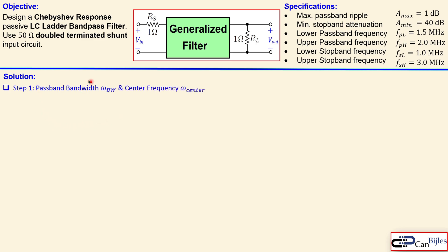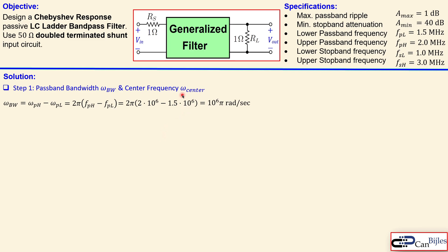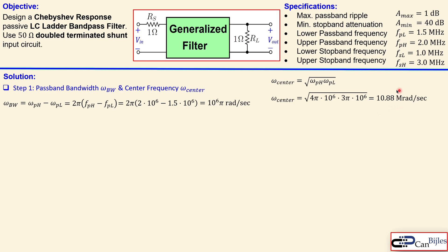Step 1 is calculation of the passband bandwidth, omega_BW, and also the center frequency, omega_center. For our specifications, omega_PH and omega_PL are given in frequencies, so we just transform them. The bandwidth is the difference between the upper and the lower passband frequency: 2π times that difference gives 10^6 π radians per second. The omega_center is the geometric mean of the upper and lower passband frequencies in radians per second — taking the square root gives 10.88 mega-radians per second.